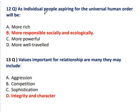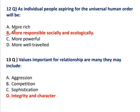Question 12: As an individual aspiring for the universal human order will be — more responsible, social and ecological. A person who is universally aspiring is more responsible socially and ecologically. The value importance for relationships are many — they may include integrity and character. Value importance for relationship, what does value give through relationship? It gives integrity and character.